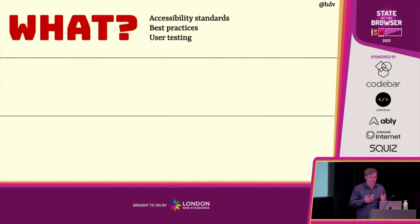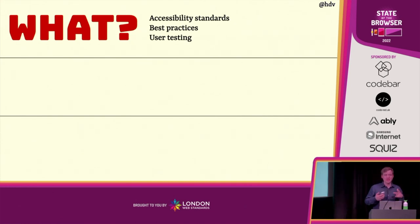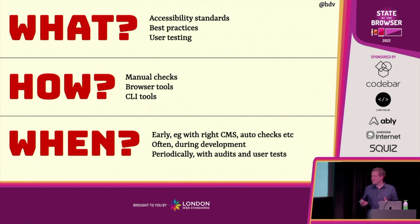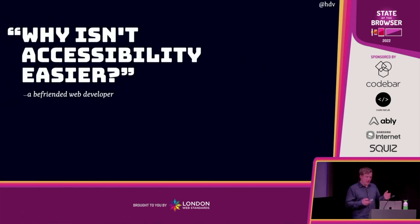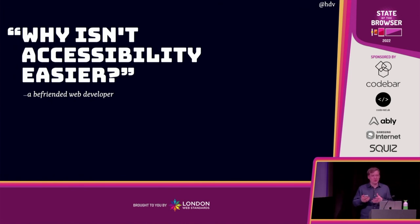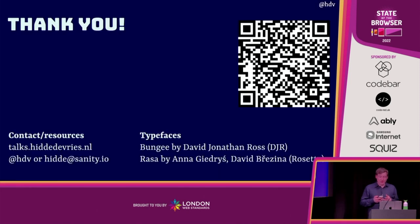Concluding: accessibility is best when you combine accessibility standards with best practices and user testing, because it is very nuanced. It works better if you do manual checks and use browser tools and CLI tools to get the best grip on your accessibility. And the earlier you do stuff the better — having the right CMS will help, checking during deployment helps, and doing periodic checks rather than one yearly audit helps. Going back to my friend who asked why isn't accessibility easier: I'm afraid I can't really make it easier, but there are ways to make it easier for yourself, which mostly comes down to trying to do it earlier, involving more users, and knowing where to look for different kinds of guidance. Thank you very much — my slides are on this QR code.